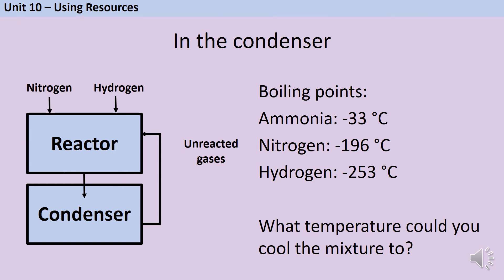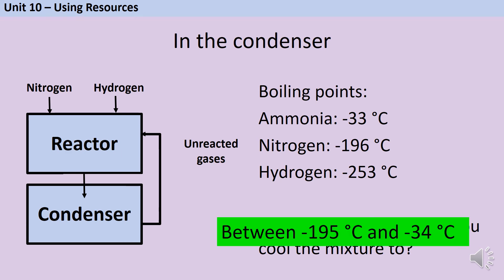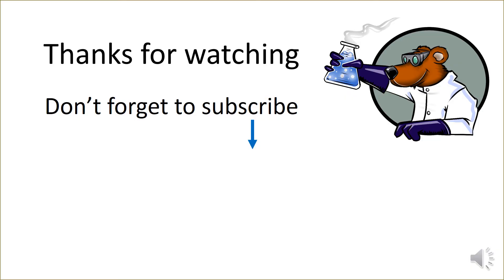Bearing in mind the boiling points shown, what temperature could you cool the mixture to so that ammonia is below its boiling point and is a liquid, while nitrogen and hydrogen are still above theirs? Hopefully you've identified that we need a temperature somewhere between −195°C and −34°C. That's it for the Haber process — thank you for watching, and if you'd like to see more videos, don't forget to like and subscribe.